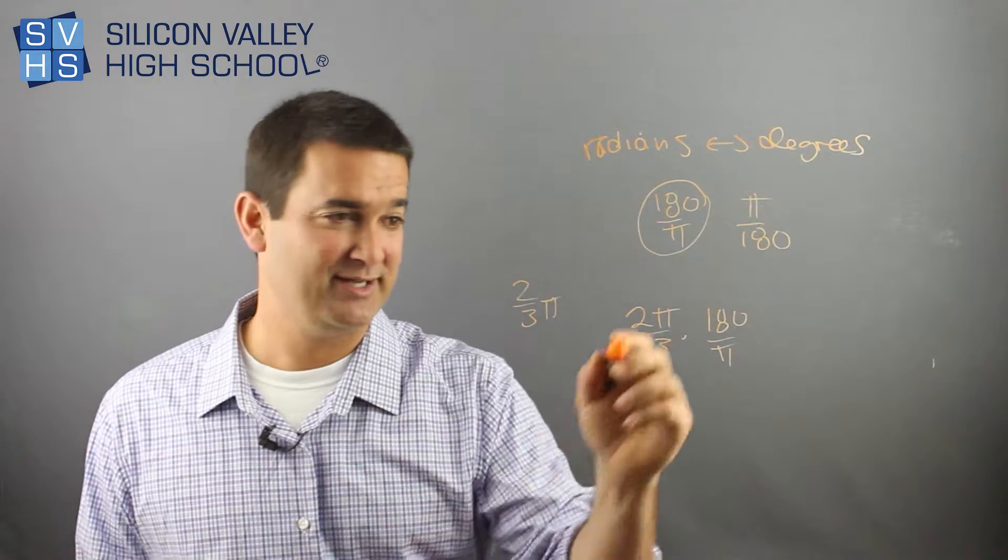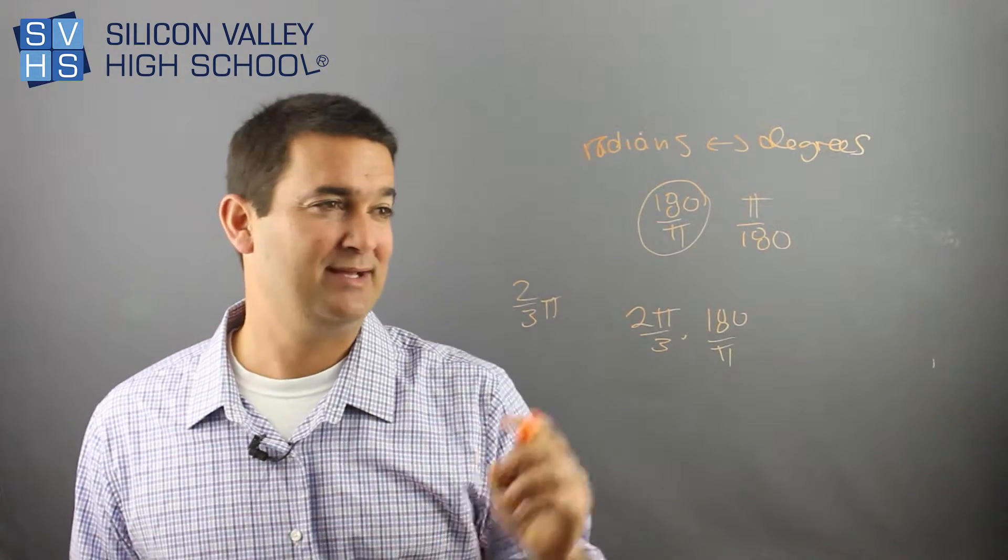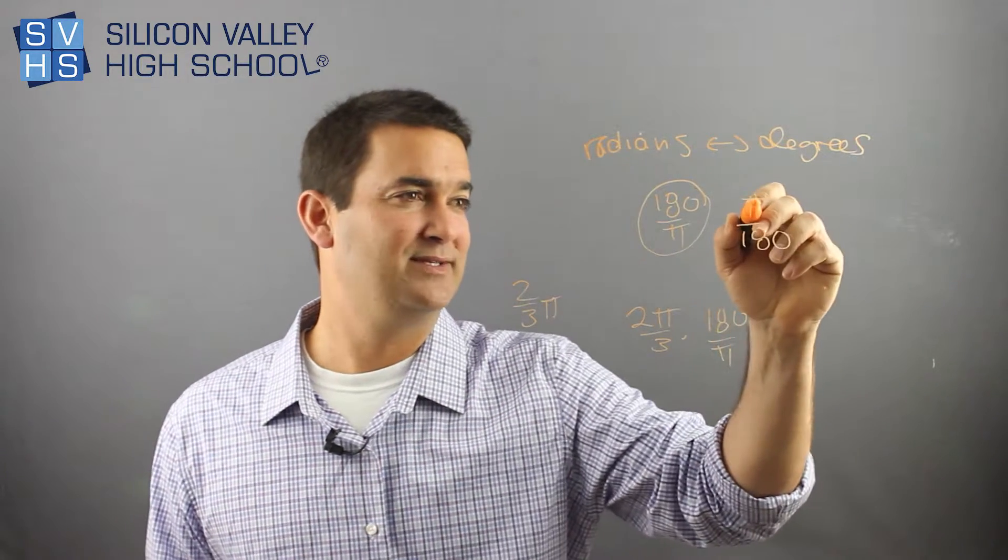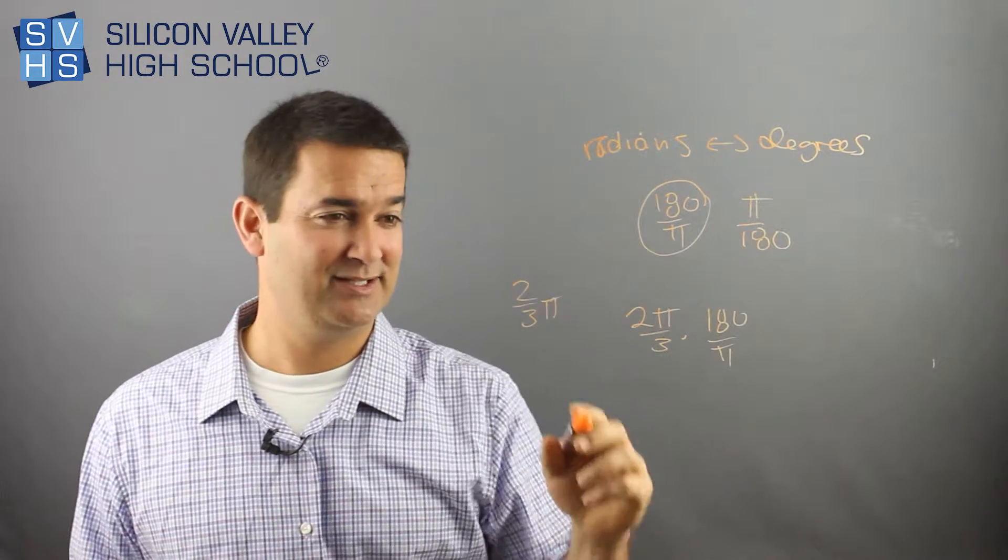And that, magically, the pi's disappear. So if you're having a hard time memorizing it, pi on the bottom is to get rid of radians. Pi on the top is to move degrees into radians. So let's do this one.